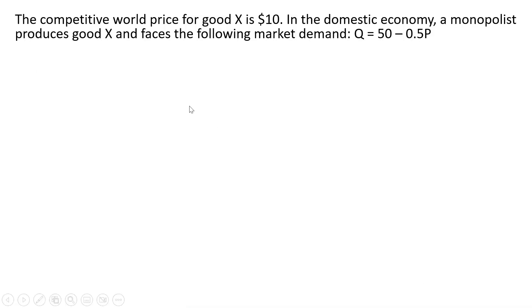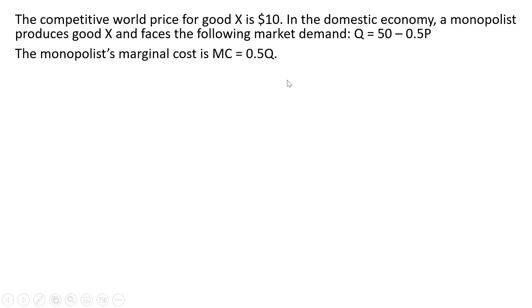The competitive world price for good X is $10. In the domestic economy, a monopolist produces good X and faces the following market demand. The monopolist's marginal cost is given by this equation here.